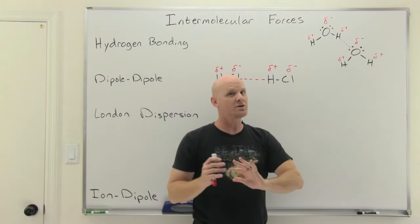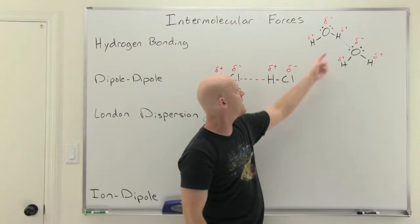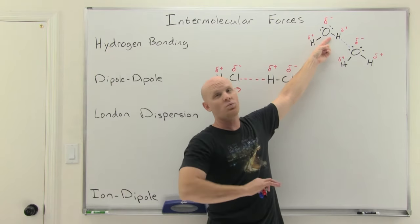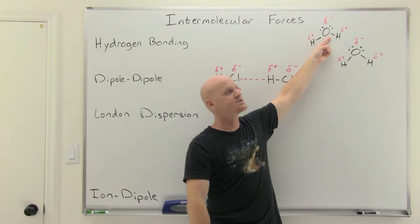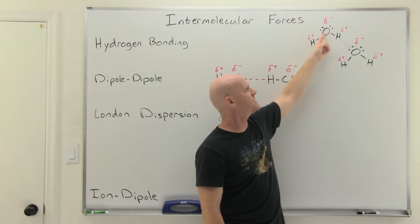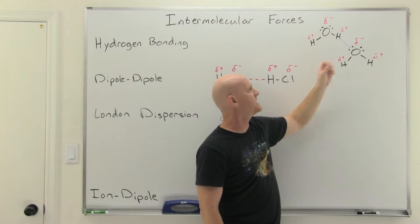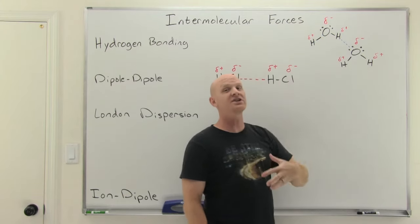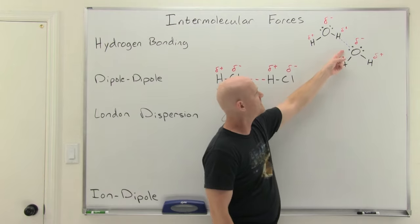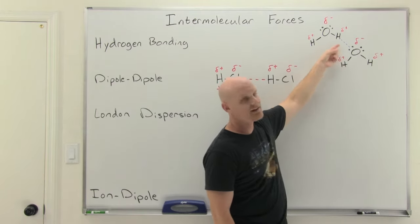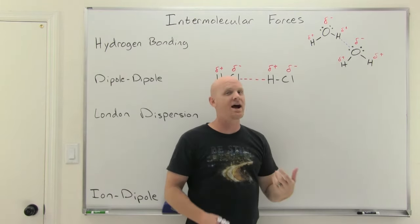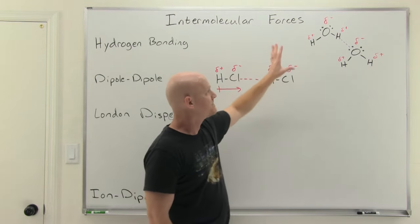Hydrogen bonding is much weaker than an actual covalent bond. This line represents an actual covalent bond — that's a way stronger force holding the oxygen and hydrogen within a single molecule. We might call that an intramolecular force. But between separate molecules, that's the hydrogen bonding — much weaker than an actual covalent bond.